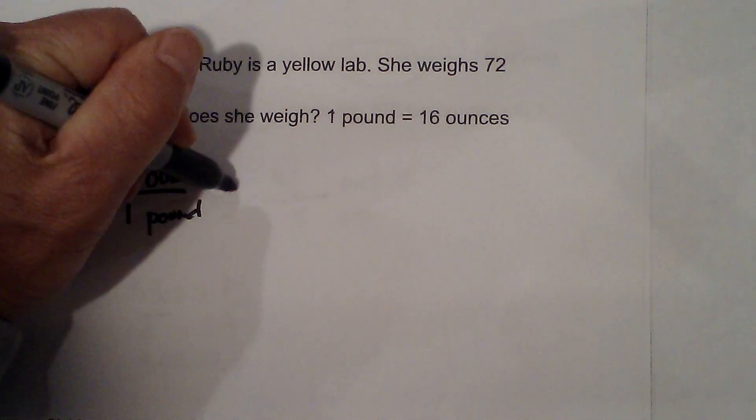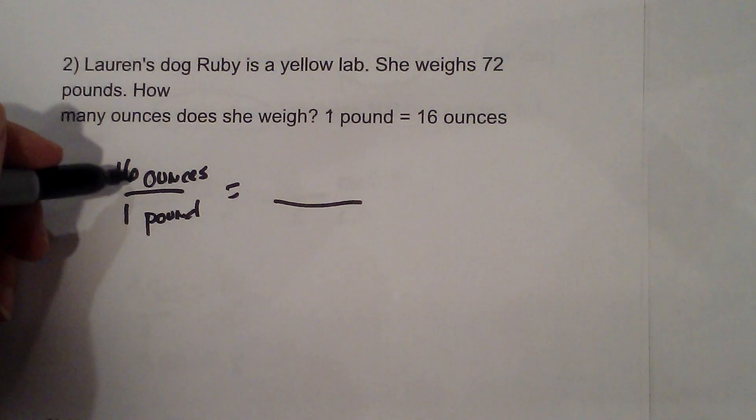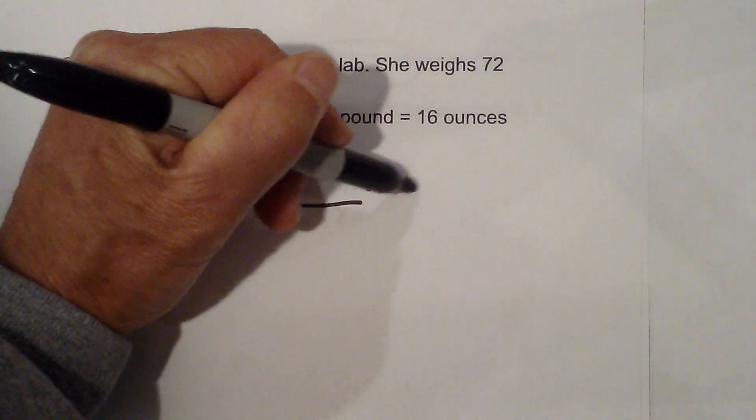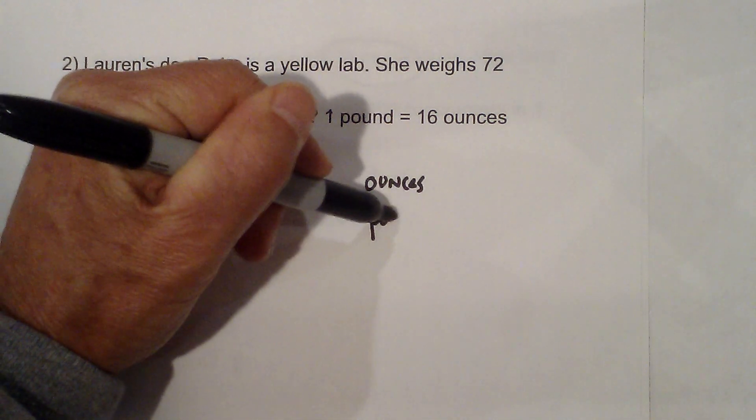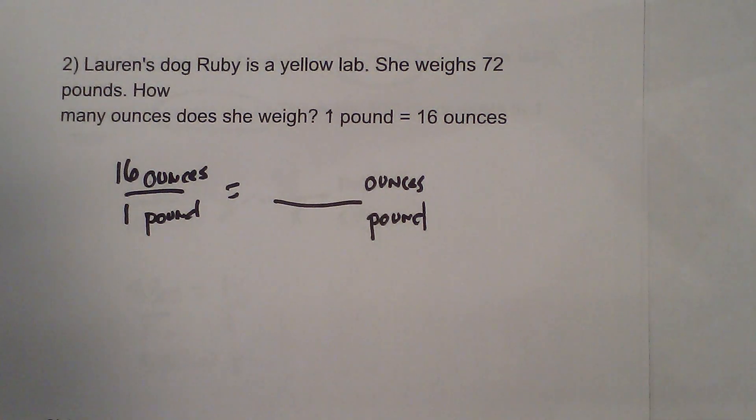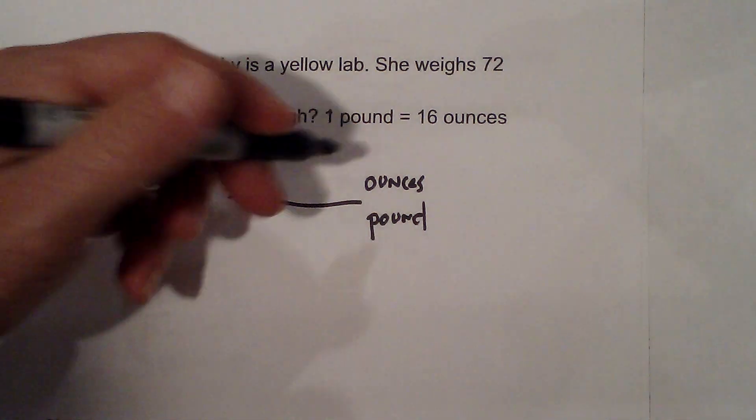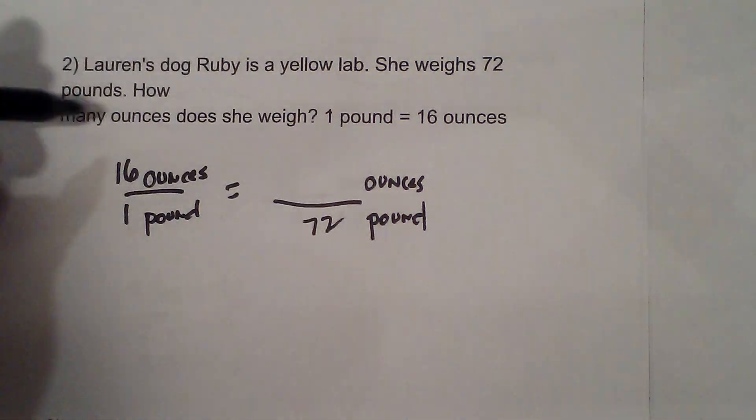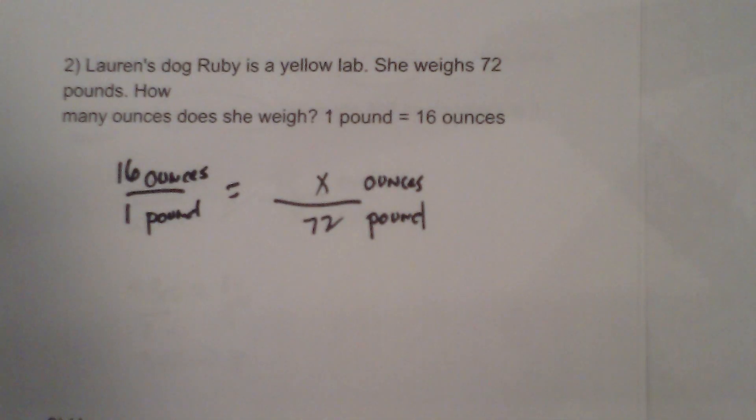And remember the rule is that you put the same units on each side. So this is ounces and this is pound. And now I fill in what is given and we are given 72 pounds and we're looking for ounces so that will be our x.